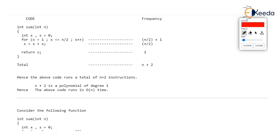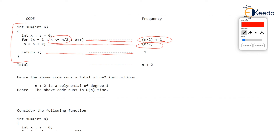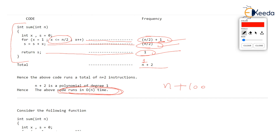The frequency count shows the for loop runs n by two plus one times and the statement inside runs n by two times. The final return statement runs once. So the total is n by two plus one plus n by two plus one, which gives n plus two. This is again a polynomial of degree one, so this algorithm also works in order of n. Even if you get n plus 100 or three n plus 100 in some program, you will still say it is order of n, because you want to specify the asymptotic notation — the growth rate of the function is linear, not quadratic.